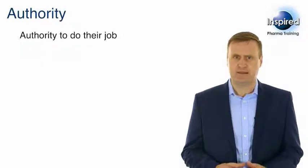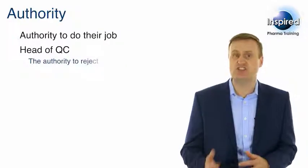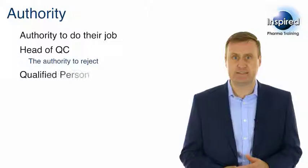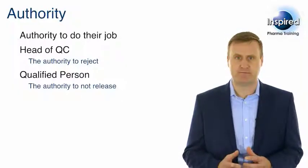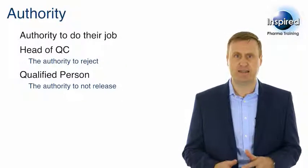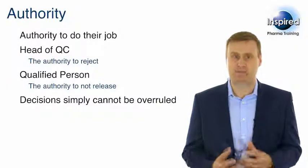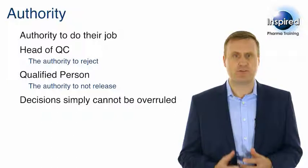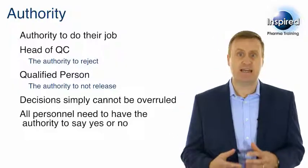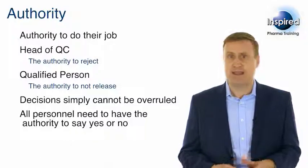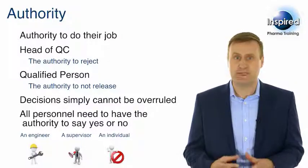This is very important in GMP. So if the Head of QC deems that a raw material does not meet specification, they need to have the authority to reject that material. If a qualified person deems that a batch of product does not meet GMP requirements, they must have the authority not to release the batch. These are examples of cases whereby individual decisions simply cannot be overruled by others. Their authority to do their job correctly depends on it. The importance of authority cascades to many other people within an organisation, and all personnel in some way or other need to have the authority to say yes or no.